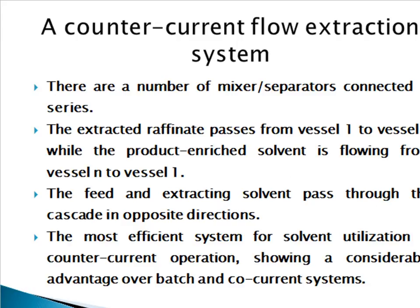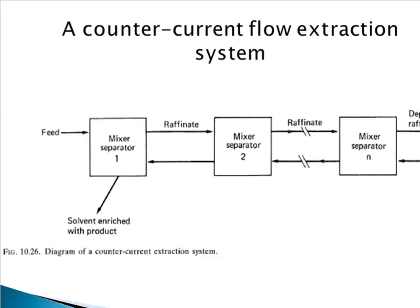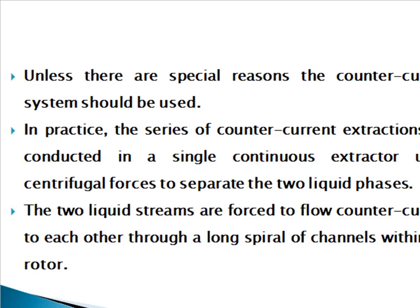In a counter-current flow extraction system, there are a number of mixers or separators connected in series. The extracted raffinate passes from vessel 1 to vessel N, while the product-enriched solvent flows from vessel N to vessel 1. The feed and extracting solvent pass through the cascade in opposite directions, hence the name counter-current. The most efficient system for solvent utilization is counter-current operation, showing considerable advantage over batch and co-current systems.